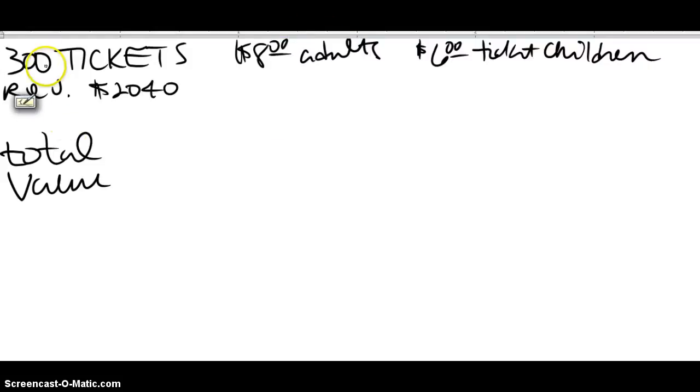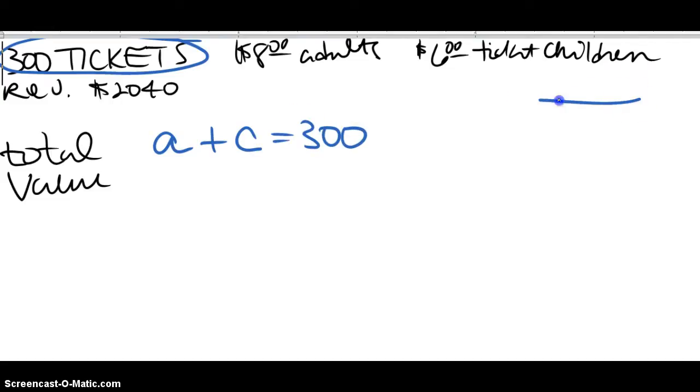So my total equation is dealing with 300 tickets. I know that I have some adult tickets that are sold and some children's tickets that are sold, and together I have a total of that many. Strip diagrams are kind of useful for this. So like you have A and C and together 300.